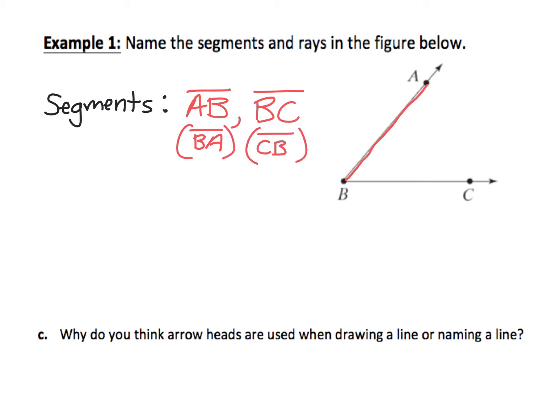Now that we have our segments, let's go ahead and name our rays. Remember that a ray is a part of a line consisting of one endpoint and all the points on one side of it. So you need to find an endpoint and then all the points on one half of it.